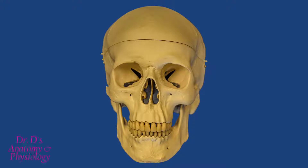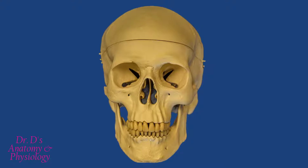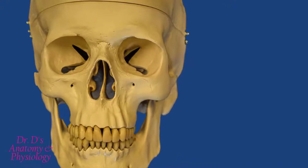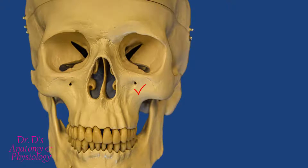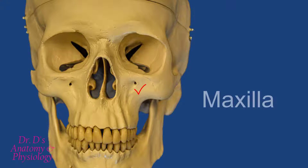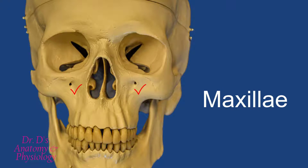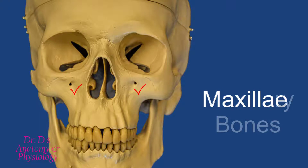In this video we'll talk about the maxillary and the palatine bones. Let's first talk about the maxillary bone. The Latin word for maxillary bone is maxilla, and these bones are paired, so you have two of them. The plural for maxilla is maxillae, but you can also simply refer to it by the anglicized version of the word: maxillary bone.